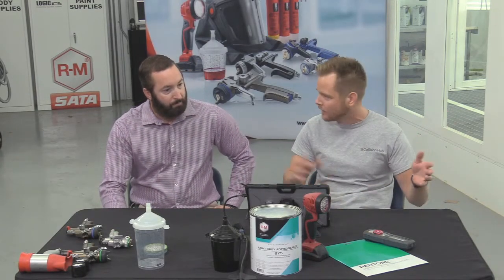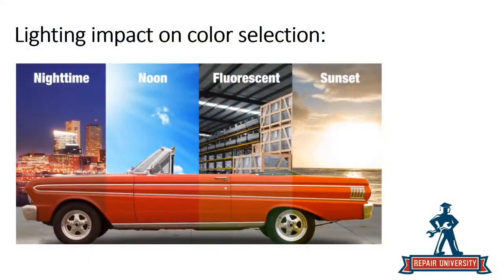We're going to cover color theory and all the things that can impact it, staging it from cradle to grave — beginning to end. First, we'll look at how lighting really affects your color selection. On this red car, there are four different spectrums: nighttime, noon, fluorescent, and sunset. You can see very visibly how each is affecting the shade of this red.